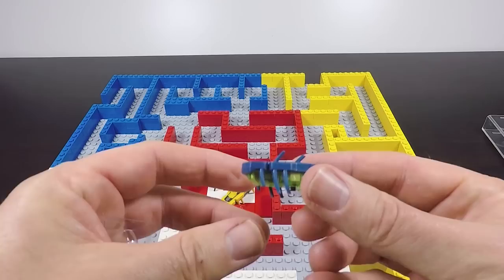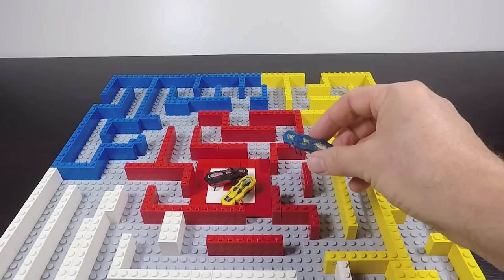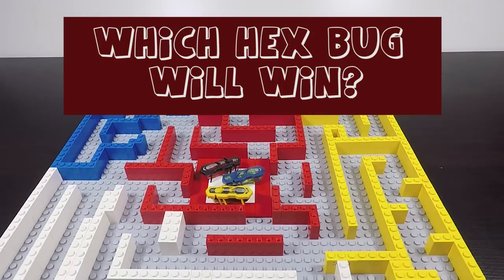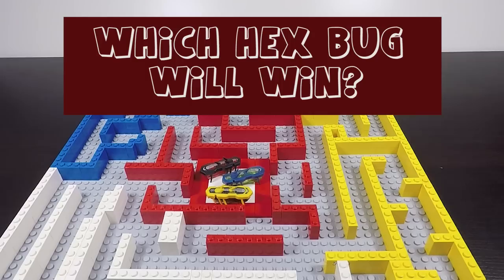All right so what I'm going to do here is actually have a little race between the black and red, yellow and black, and the blue and green. So which hex bug do you think will escape the maze first? Now they can get out of any of these exit points so let's see how they go.